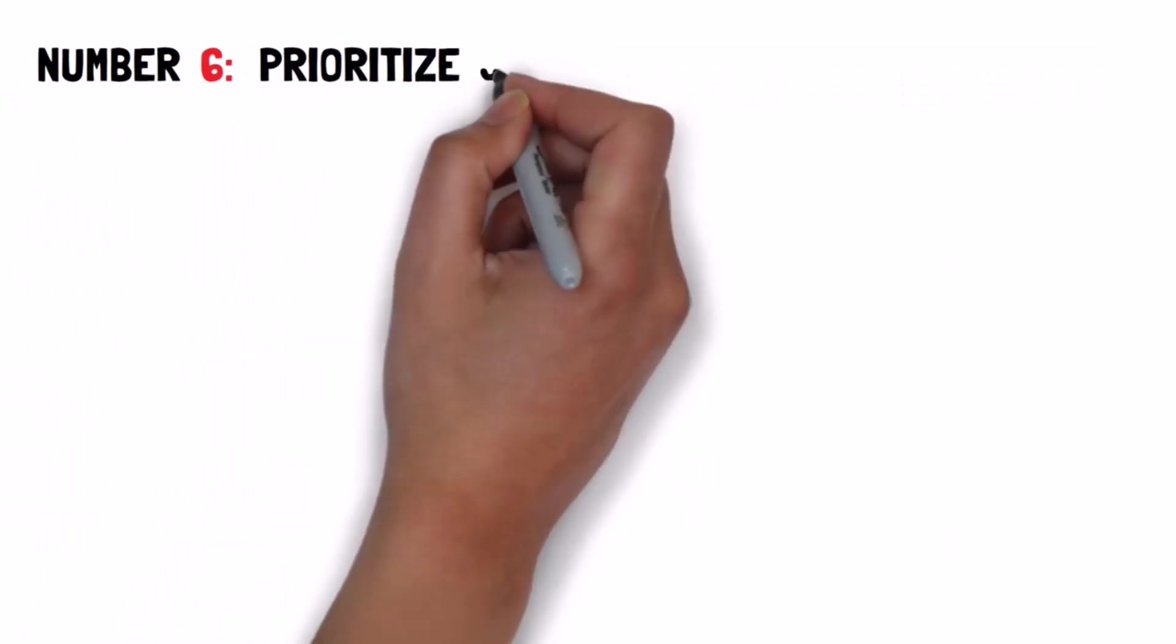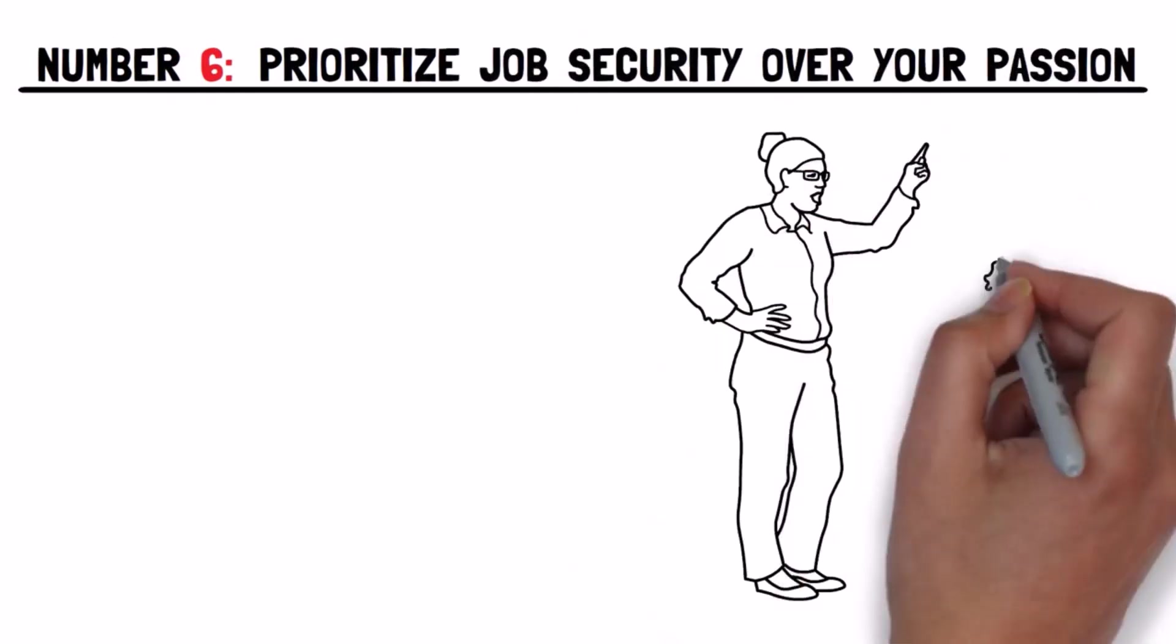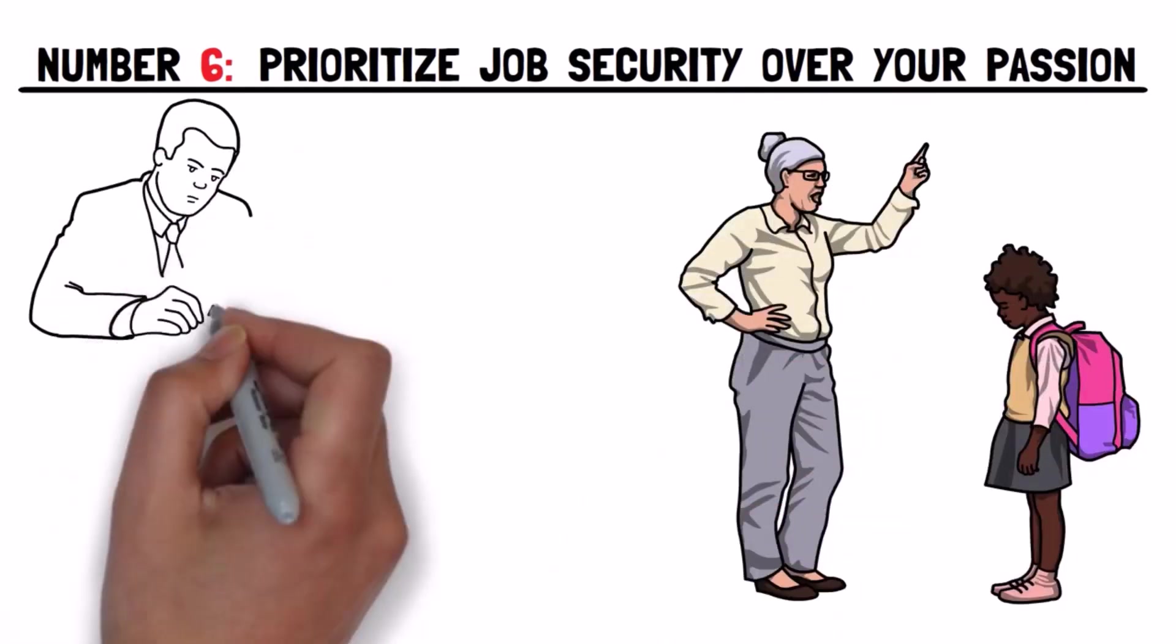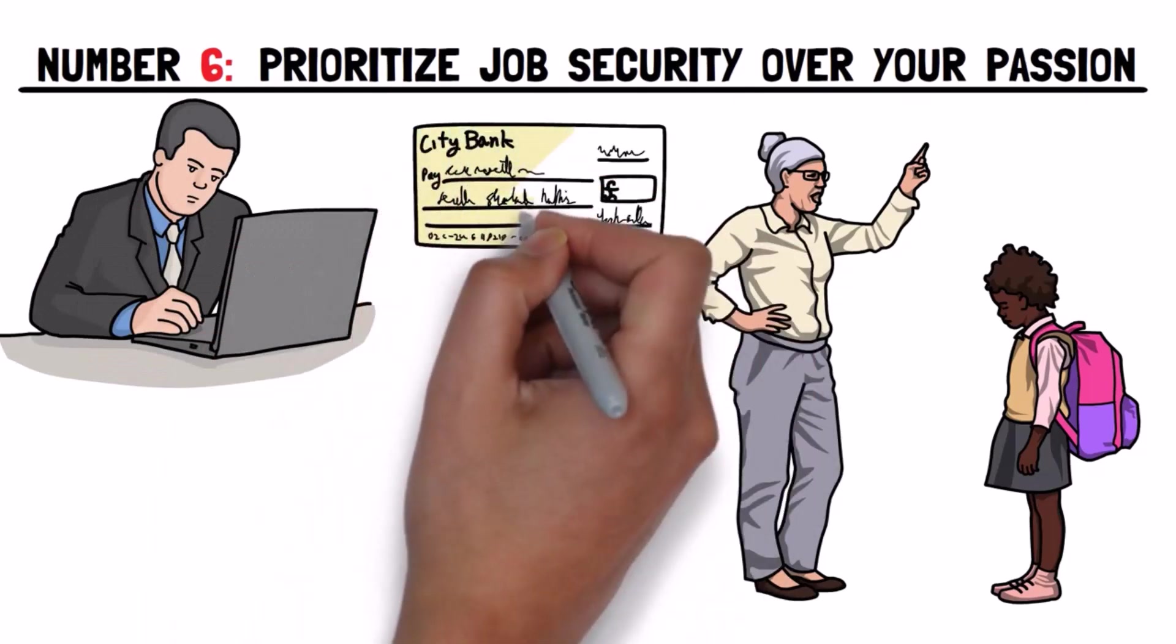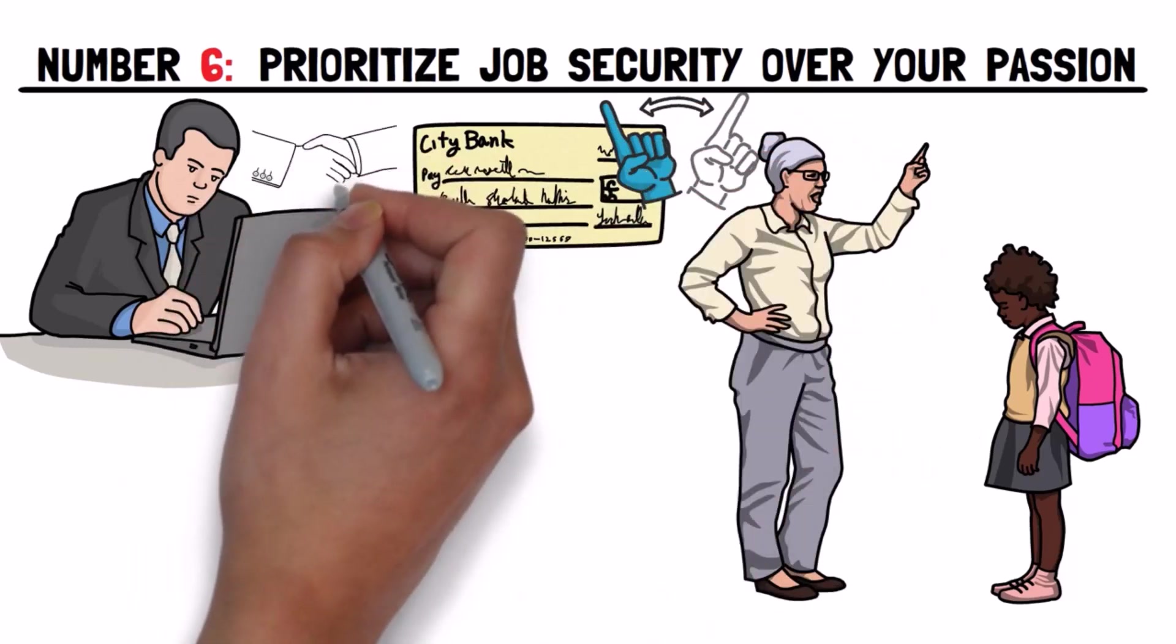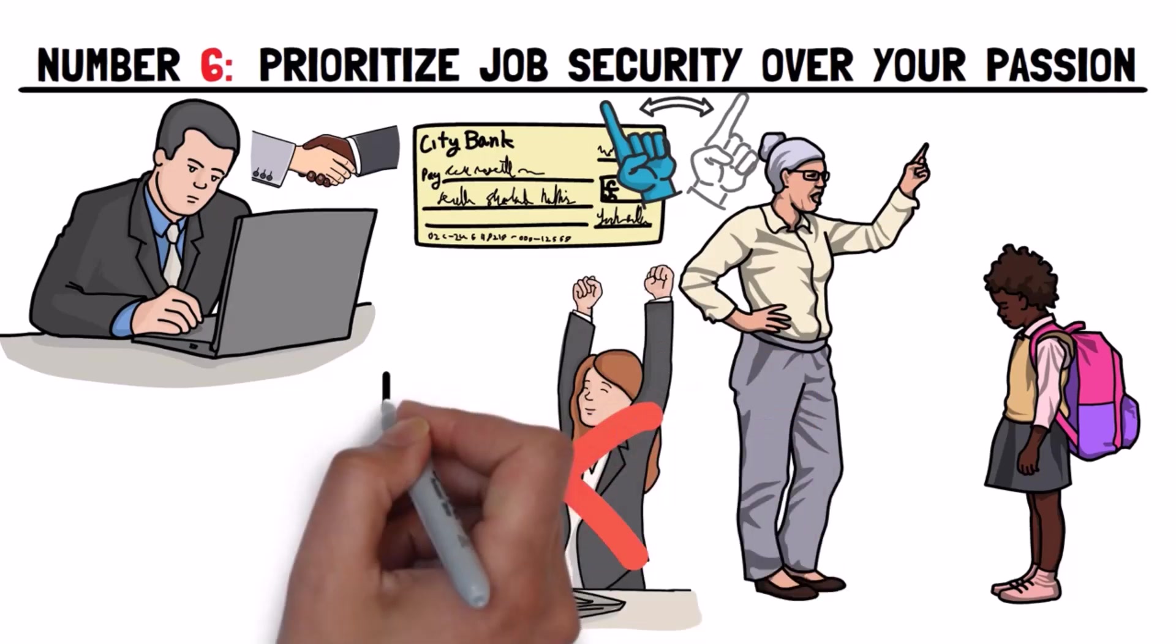Number six, prioritize job security over your passion. Here's another not-so-smart piece of advice parents give. Stick to a safe job and forget about your dreams. They might say, get a steady job with a regular paycheck and don't take risks, but here's the deal. Following this advice might mean you never get to do what you're truly passionate about.